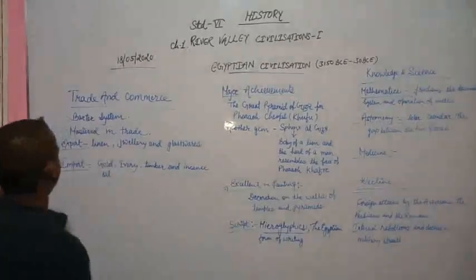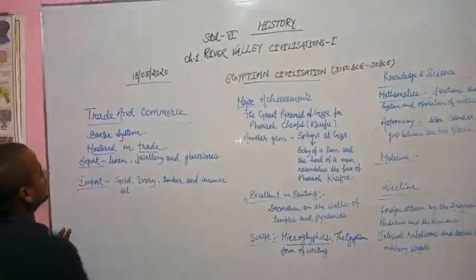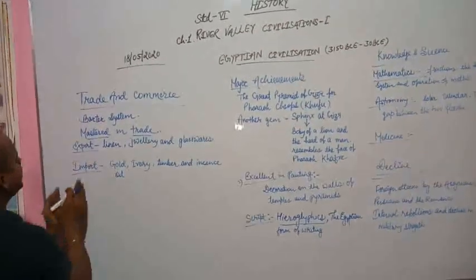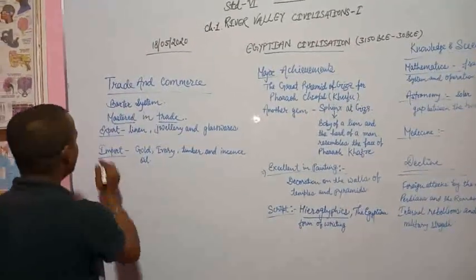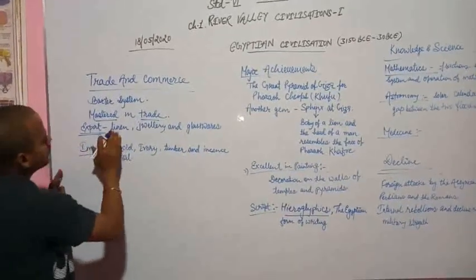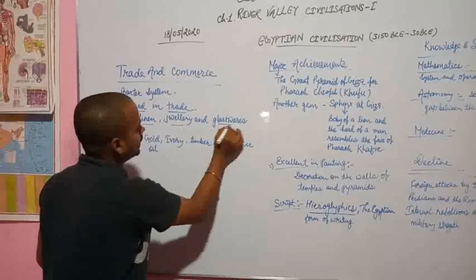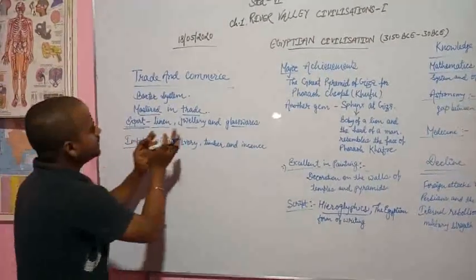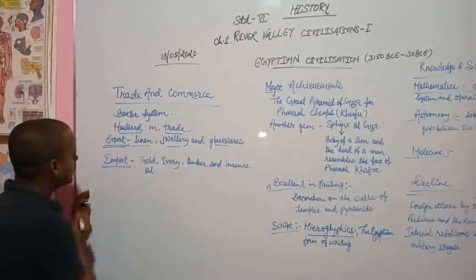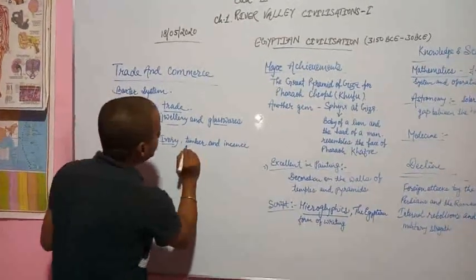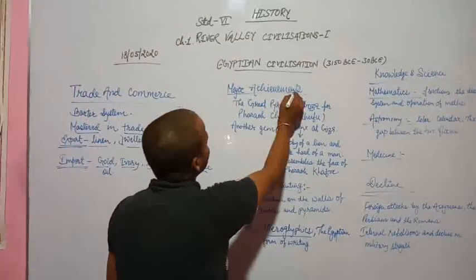Trade and commerce during Egyptian civilization. They were mastered in trades with export and import. In export they did linen, jewelry, glass. In import, they brought gold, ivory, timber and incense oil.